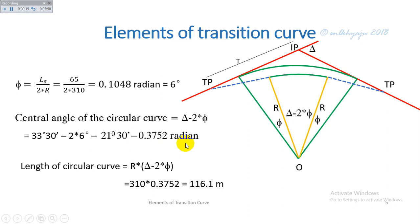The length of the circular curve is given by R × (delta − 2 phi) and is calculated as 78.79 meters — approximately 116.1 meters as stated in the solution.